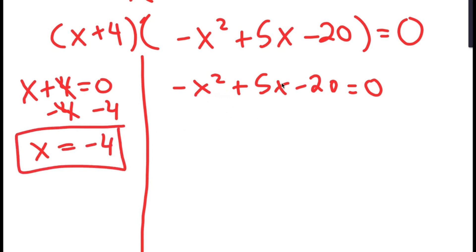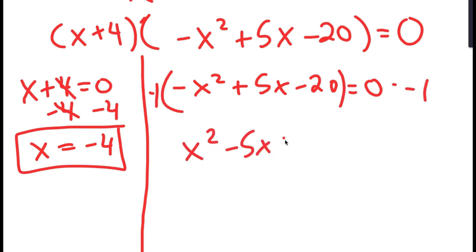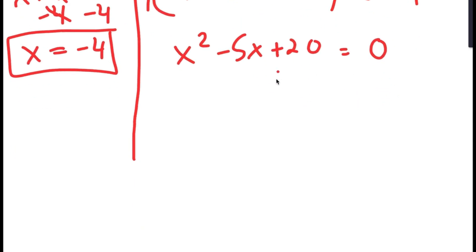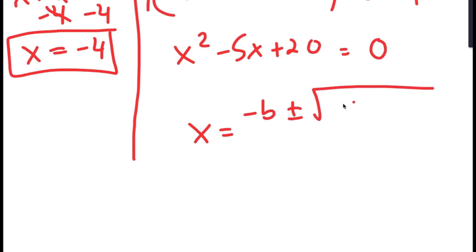For negative x squared plus 5x minus 20 equals 0, we have a negative sign in front of x squared, so I'm going to multiply both sides by negative 1. I get x squared minus 5x plus 20 equals 0. To solve this, I'm going to use the quadratic formula: negative b plus or minus the square root of b squared minus 4ac, all over 2a.